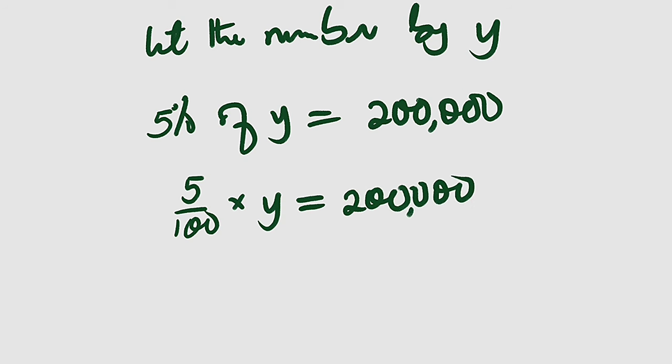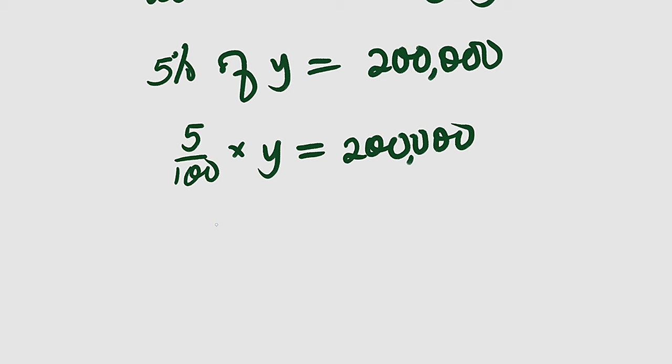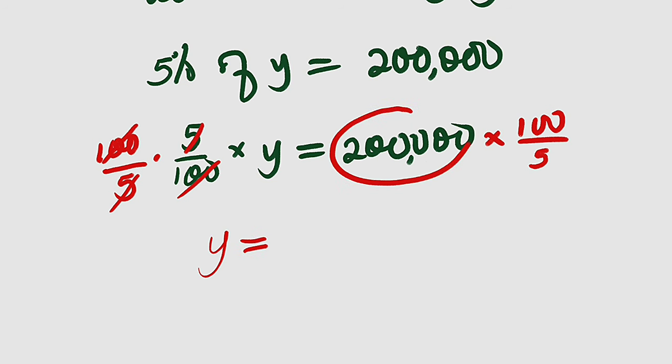Then to find this y we can multiply both sides by the reciprocal of this. Therefore we can multiply this by 100 divided by 5. We do the same thing here, 100 divided by 5, so that this cancels this, this cancels this.